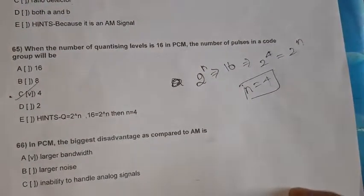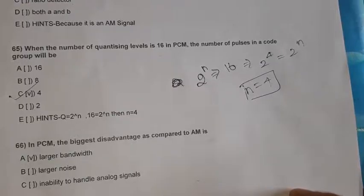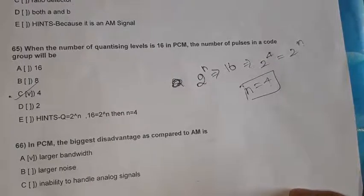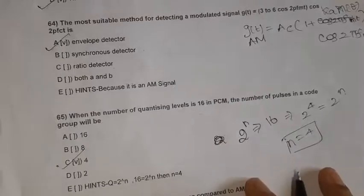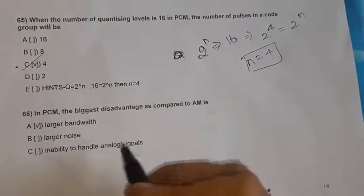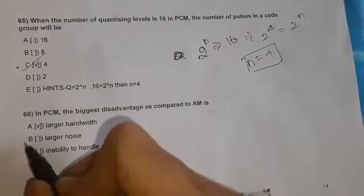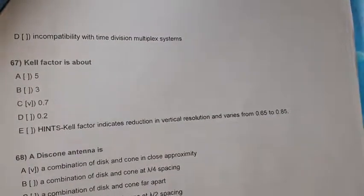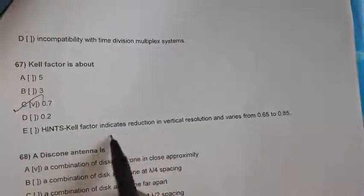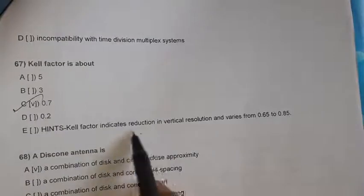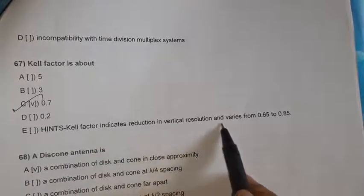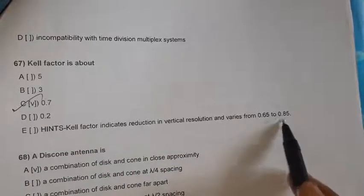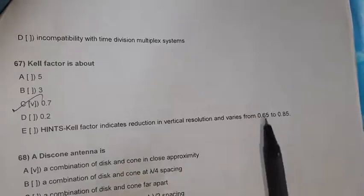Question 66: In PCM the biggest disadvantage compared to AM is larger bandwidth. Question 67: The Kel factor is approximately 0.7. In general, the Kel factor indicates a reduction in vertical resolution and varies from 0.65 to 0.785, approximately 0.7.